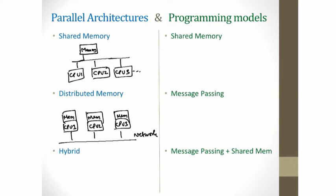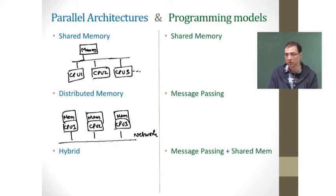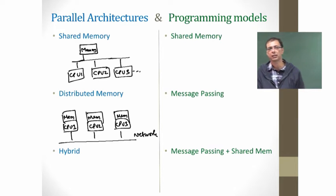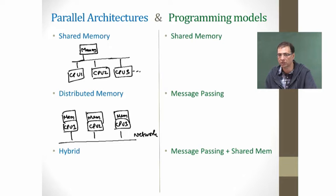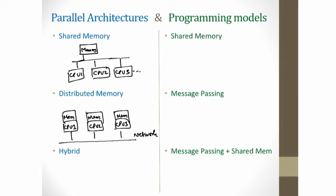The bottleneck shifts to the network. It all depends on what kind of network you design. There are different kinds of networks — a completely connected network connecting all the processes together, or a simpler network like Ethernet which is shared across all processes. The important point is that the bus is not a bottleneck. The bottleneck shifts to the network, and depending on how you design the network, you can scale this to a large number of processes.